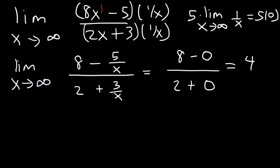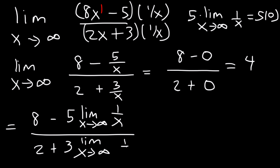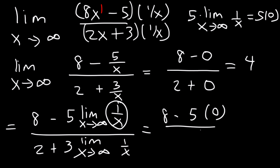So 8 divided by 2 is 4. For those of you who want to write out every step, you can write it like this. You can apply the formula — since this is a rational function it's going to equal 0 for those terms. In the end, you're going to get the same answer: positive 4.